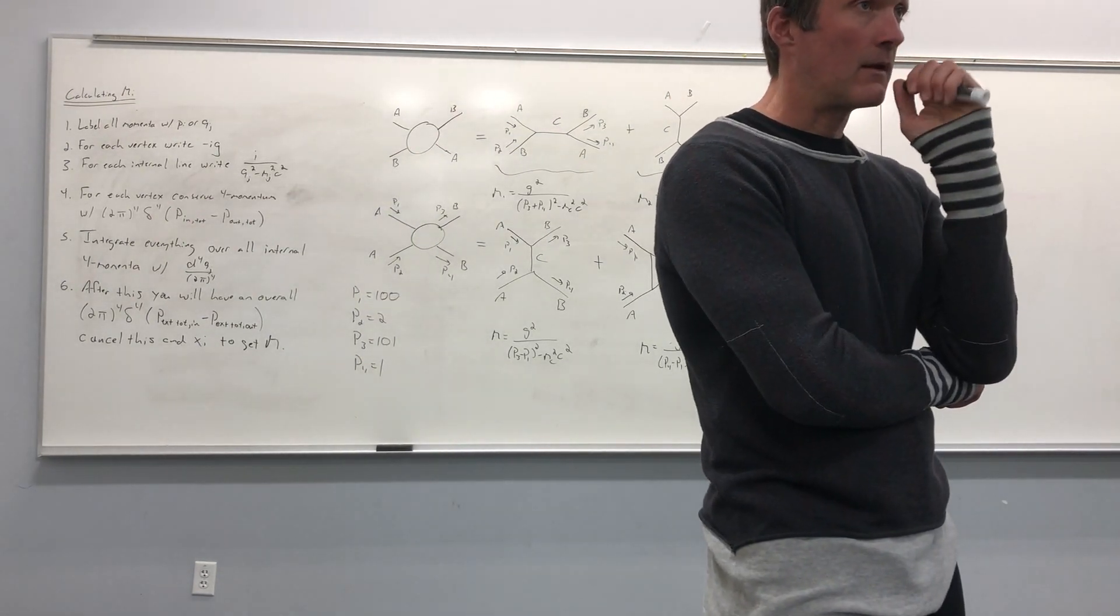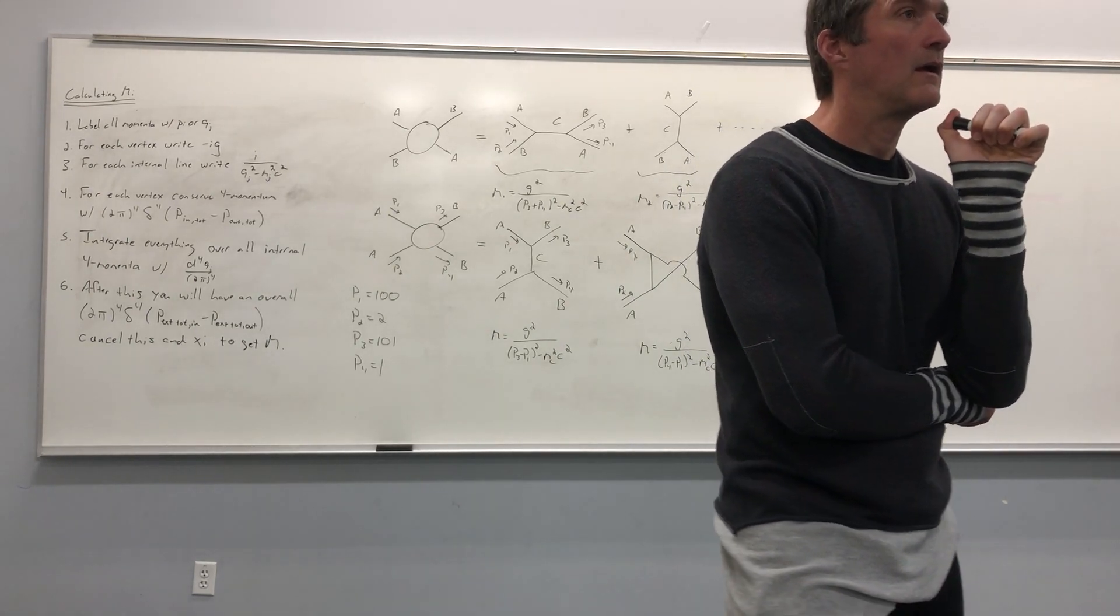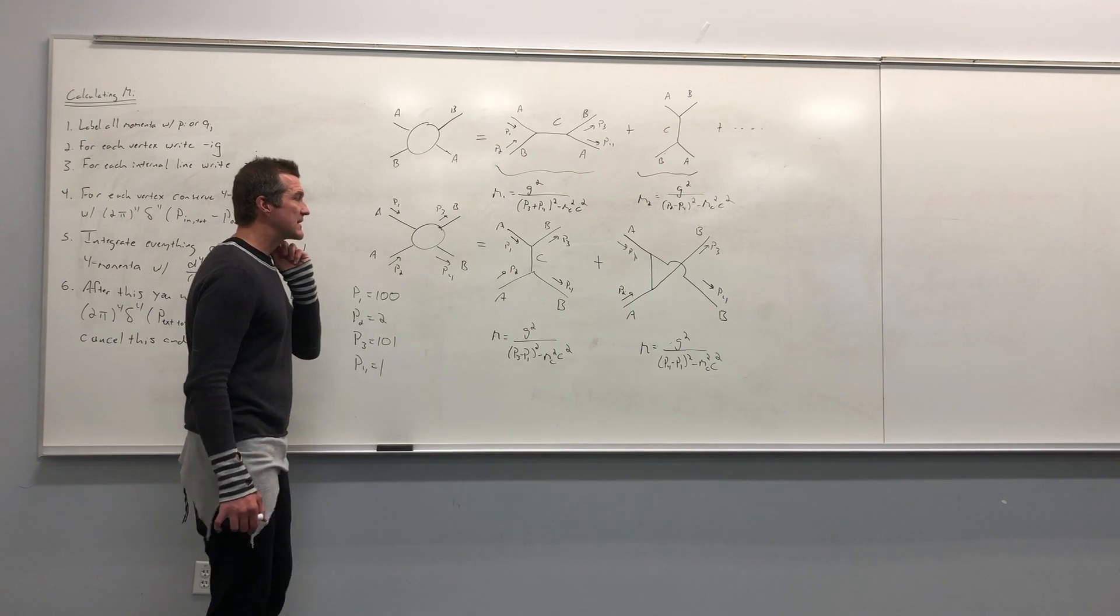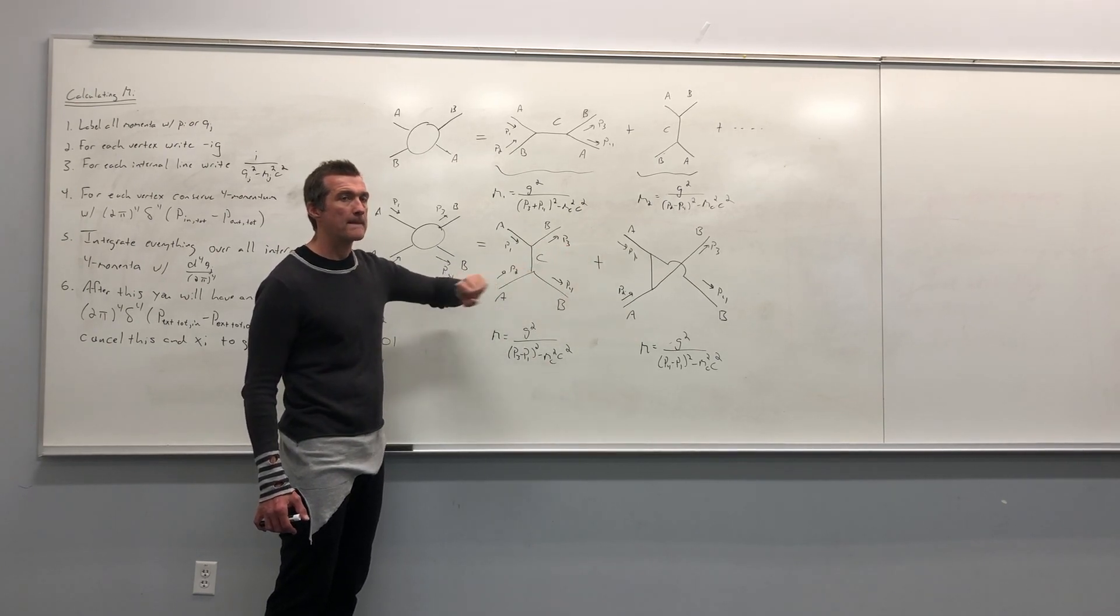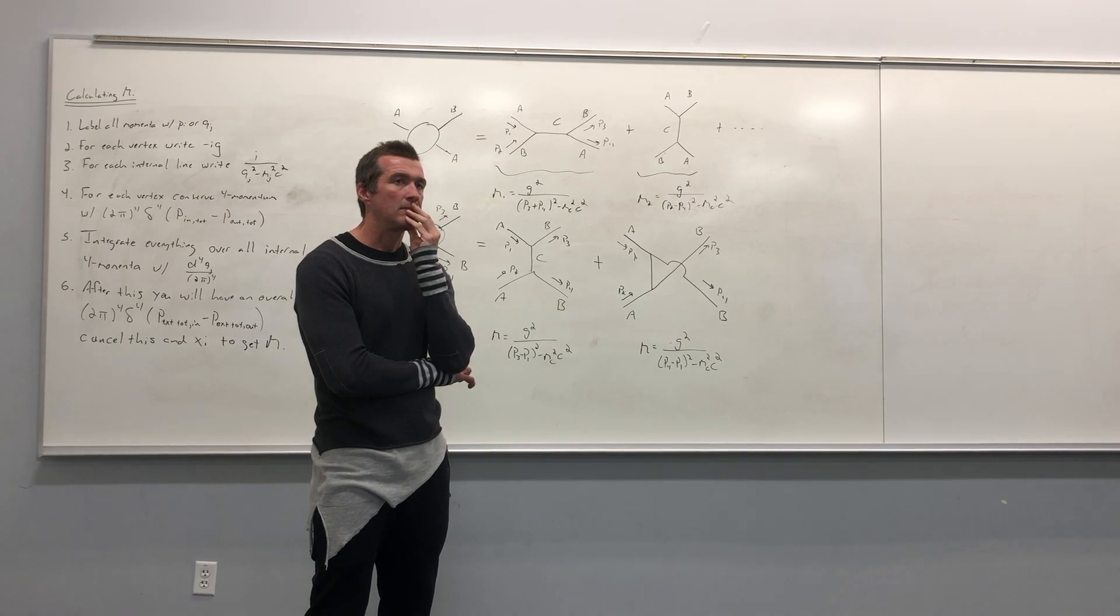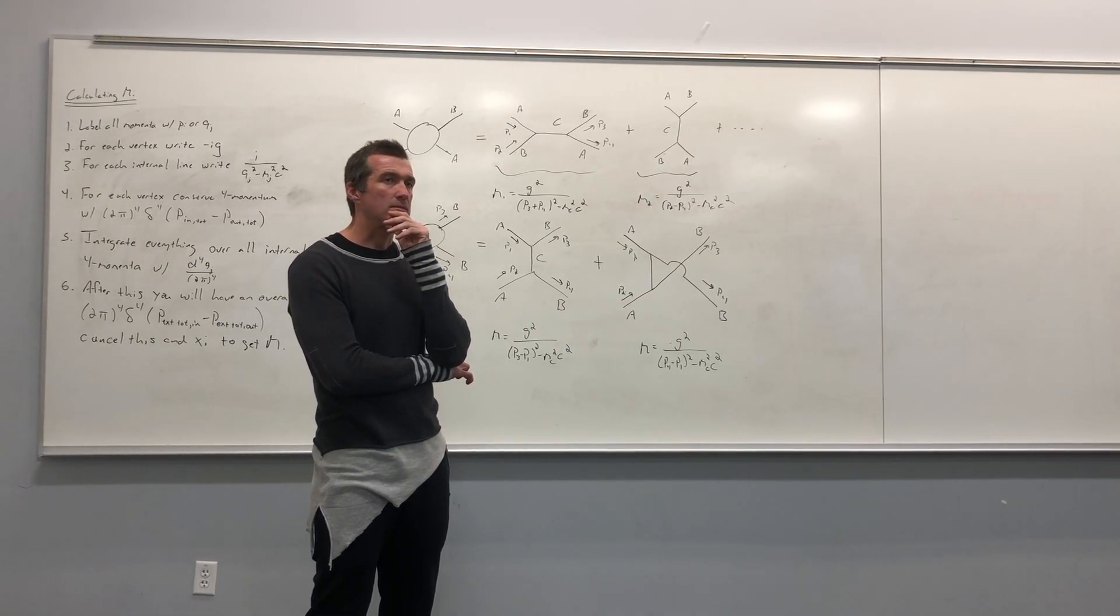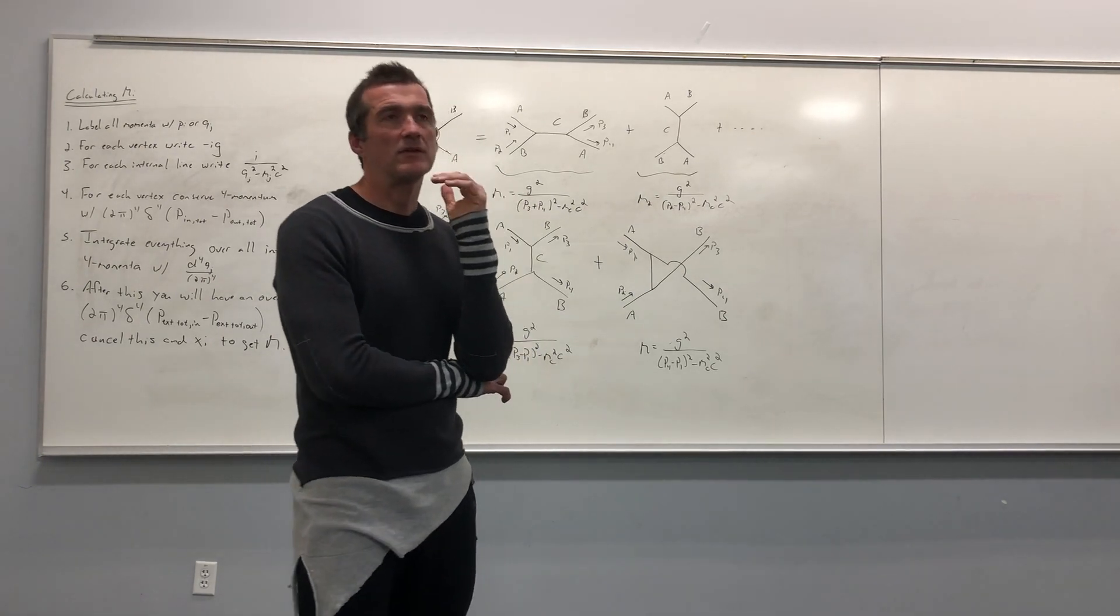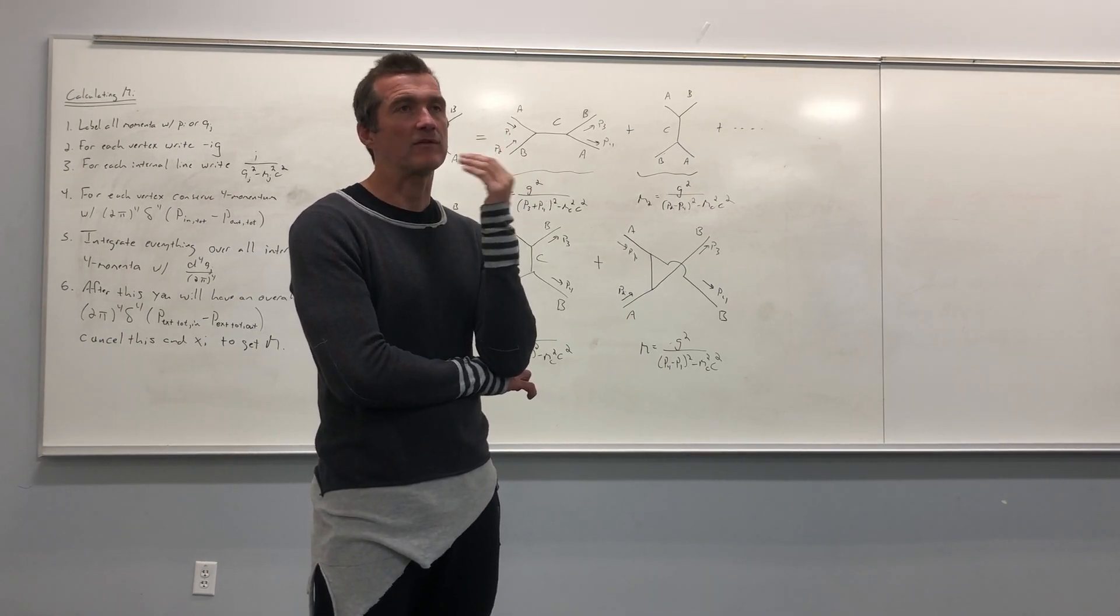Student: Is there a rigorous way to know how many vertices you're going to need to have? Like, that second one wouldn't have been obvious. Is there a way to know that it has to be there? Instructor: This second diagram? The second diagram is obvious because you have two identical particles coming out. But is there a way to know how many of these vertices you're going to need and what the multiplicity of that number of vertices is? I don't think that there's an algorithmic way to do it. But you just have to think about the situation and construct all of the diagrams at a certain order with a certain number, which is counted by the number of vertices.